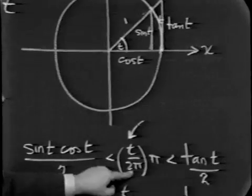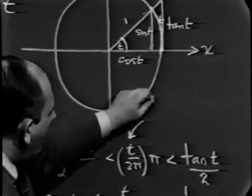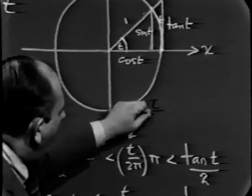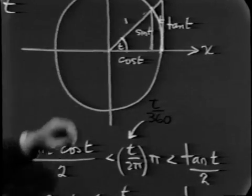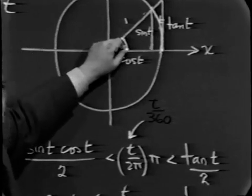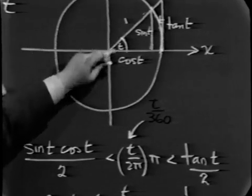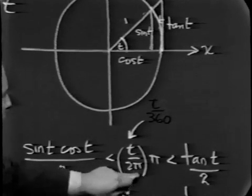Let me point out that if we insisted on working with degrees, instead of t over 2 pi, we just would have had t over 360. Because you see, if we're dealing with degrees, the entire angular measure of the circle is 360 degrees, and we would have had t over 360. But here we've used the fact that we're dealing with radians.